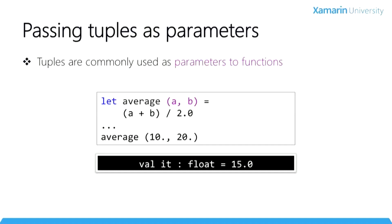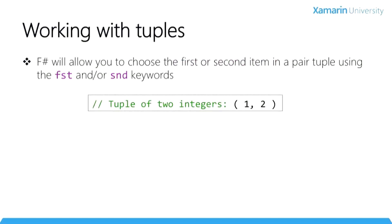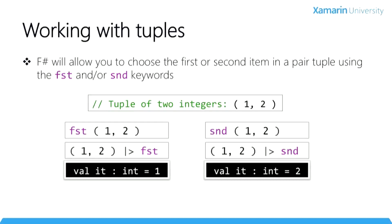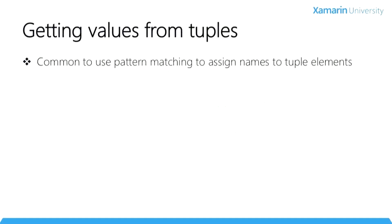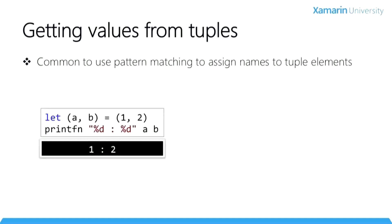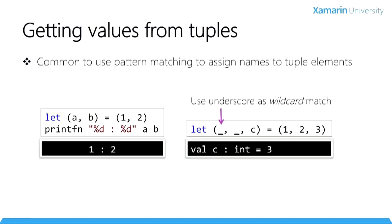F-Sharp provides two keywords — fst and snd — to retrieve the first and second items from a pair tuple. You can use either the keywords as a function or with pipelining. Interestingly, there's no function available to retrieve the third or subsequent elements, and these keywords only work if the tuple is a pair. Instead, we use pattern matching to pull elements out of tuples. F-Sharp allows us to assign tuple positions to named values directly. If you're only interested in some elements, you can use an underscore as a wildcard to ignore that positional value — here we're only getting the third value and ignoring the first two.